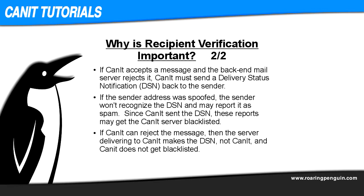The other reason is to avoid being blacklisted on RBLs. When CANET accepts a message to a non-existent recipient and then tries to deliver it to the back-end mail server, and the back-end mail server rejects it, CANET is now responsible for sending a delivery status notification, or DSN, back to the sender. Often times the sender address is spoofed, so the sender gets this DSN in their inbox for a message they never sent or have never heard of, and they might report it as spam. Since CANET is the server that sent the DSN, CANET is the server that gets listed on the RBL. If, on the other hand, CANET were to reject the message, then the server trying to deliver the message to CANET is now the one that has to send the DSN, not CANET, so CANET won't get blacklisted.